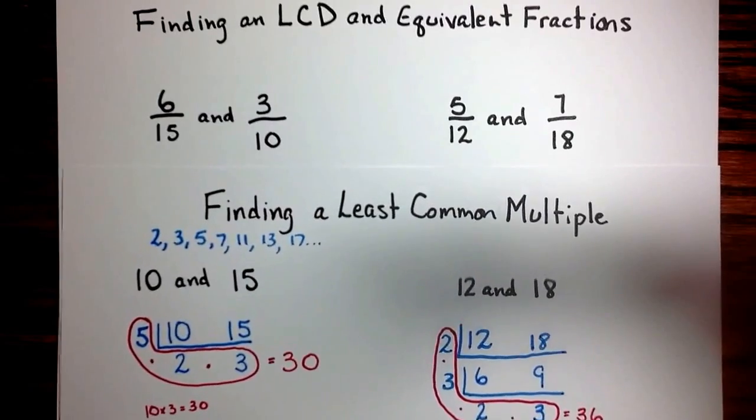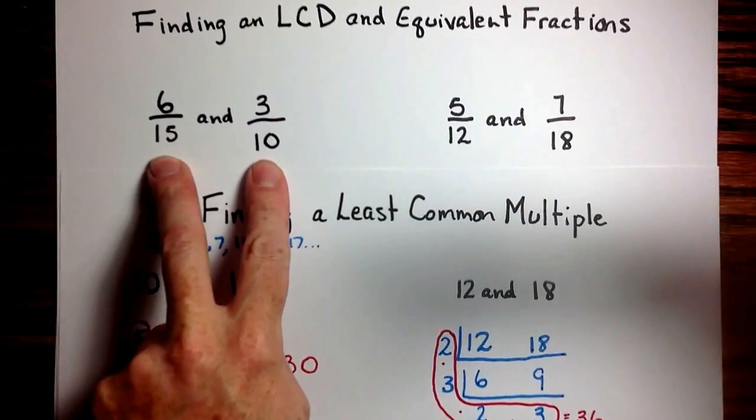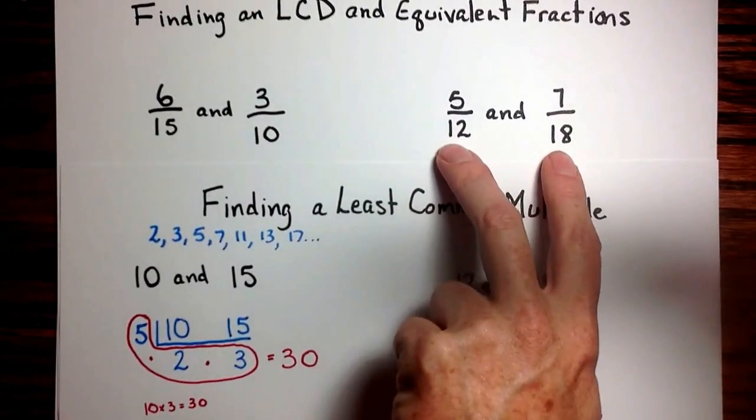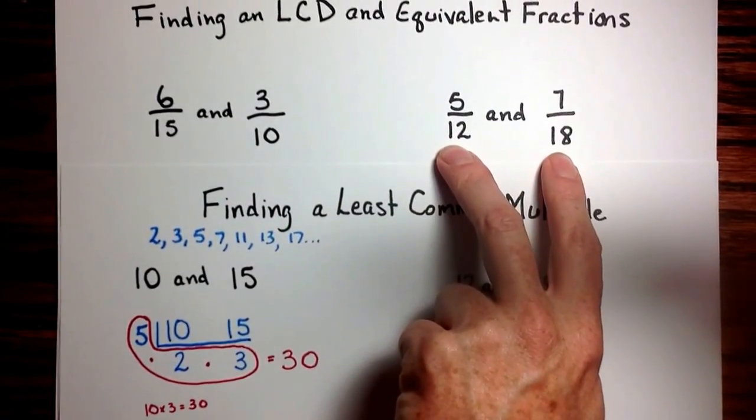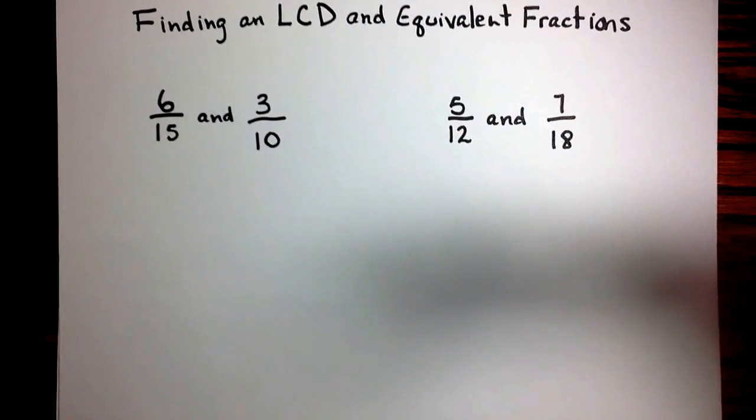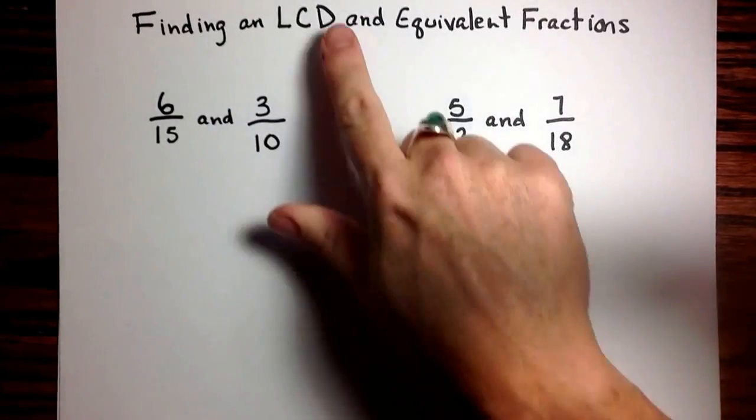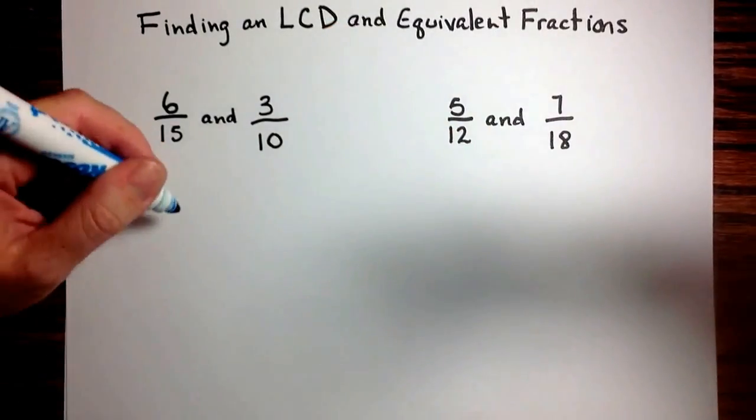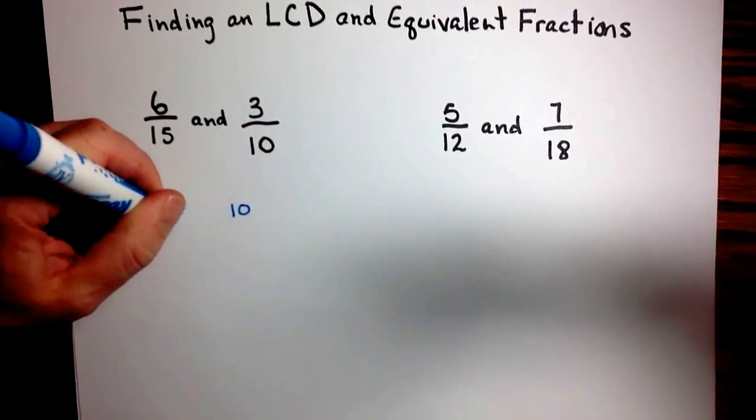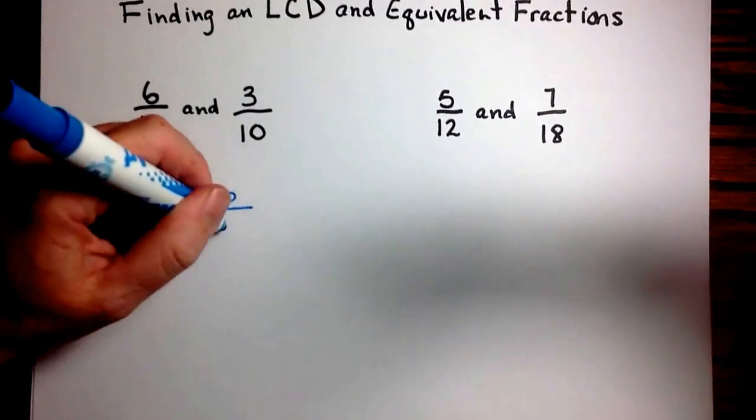As you can see in these first two problems, our 10 and 15 have become the denominators of two fractions, and the 12 and 18 have also become the denominator of two fractions. So we're going to use the same process that we used in finding a least common multiple to find a least common denominator, because those are the same thing. A least common denominator is just a least common multiple that occurs in the denominator of a fraction.